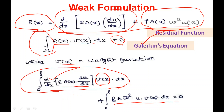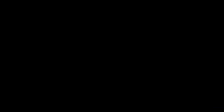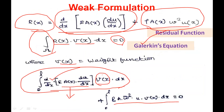This integral differential equation can be solved using the integration by parts formula. The integration by parts formula is: ∫u dv = uv − ∫v du. In our case, u is taken as v(x) and dv is taken as d/dx of (EA du/dx). So u = v(x) and v = EA(x) du/dx.